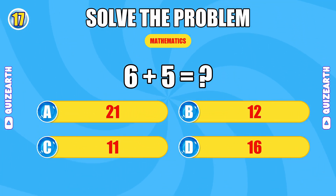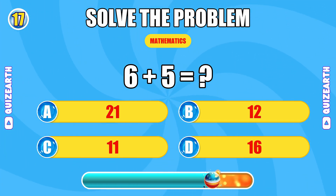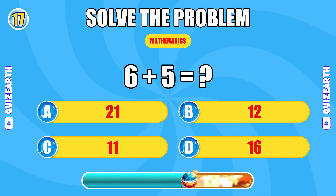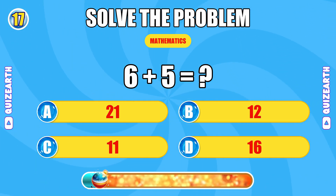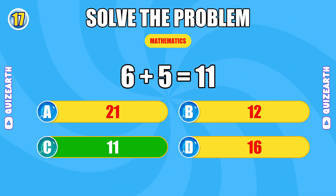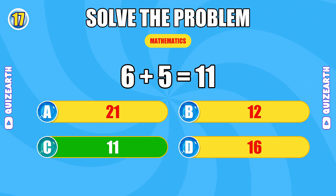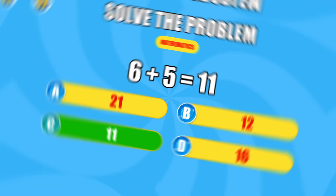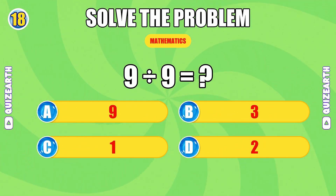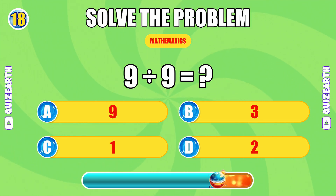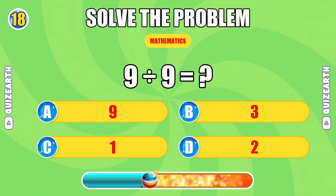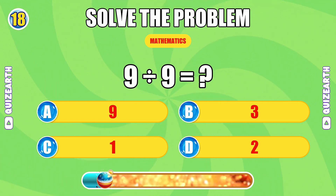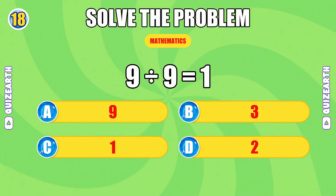How much is six plus five? Lightning quick — the answer is 11. What do you get when you divide nine by nine? On fire — the answer is one.